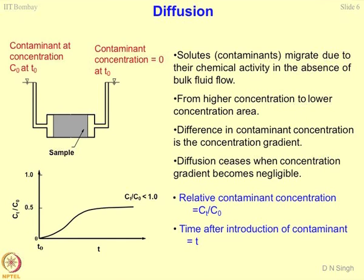The key attribute is that migration of concentration is from higher concentration to lower concentration. The difference in contaminant concentration is the concentration gradient, delta C by delta x. The diffusion process will stop when the concentration gradient becomes negligible — that is the most stable state where C naught becomes equal to C_T.